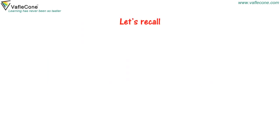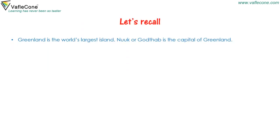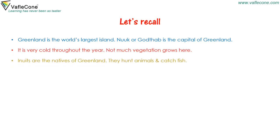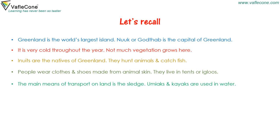Now let's recall. Greenland is the world's largest island. Nuuk is the capital of Greenland. It is very cold throughout the year and not much vegetation grows here. Inuits are the natives of Greenland — they hunt animals and catch fish. People wear clothes and shoes made from animal skin and live in tents or igloos. The main means of transport on land is the sledge, while umiaks and kayaks are used in water.